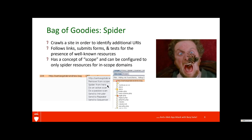Another item in the bag of goodies is the Burp Spider. What this does is it crawls a site and allows you to identify additional resources that might be hosted there. It will follow links, and if there are any forms — such as logins or other types of forms — it will submit them. It will also check well-known resources, such as WP-admin for example, and determine whether or not those are available. In terms of professional penetration testing, Burp has a concept of scope, so if there are links included in a site that are not within our scope, we can configure Burp to only follow things within our scope — which is a really useful feature.